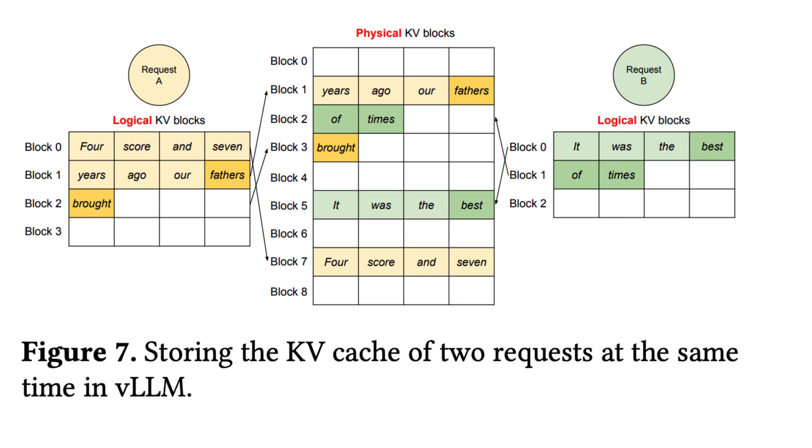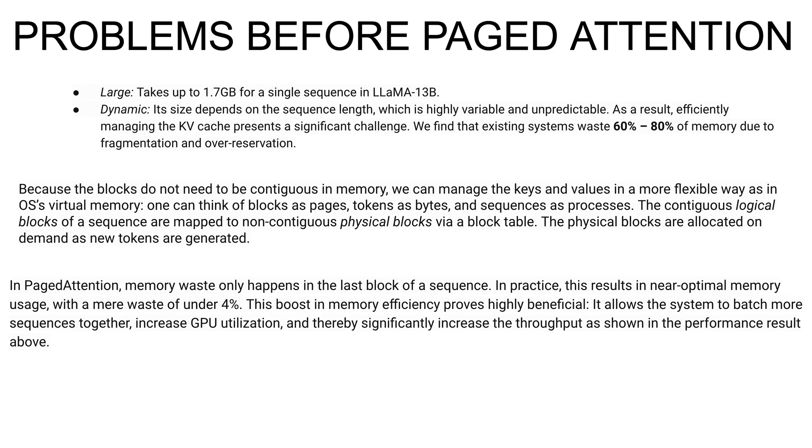The KV block manager maintains the block table - the mapping between the logical and physical KV blocks of each request. Each block table entry records the corresponding blocks of a logical block and the number of filled positions. In this figure, we're showing how vLLM manages memory for two sequences. The logical blocks of the two sequences are mapped to different physical blocks within the space reserved by the block engine in GPU workers. The neighboring logical blocks of both sequences do not need to be contiguous in physical GPU memory, and the space of physical blocks can be effectively utilized by both sequences.